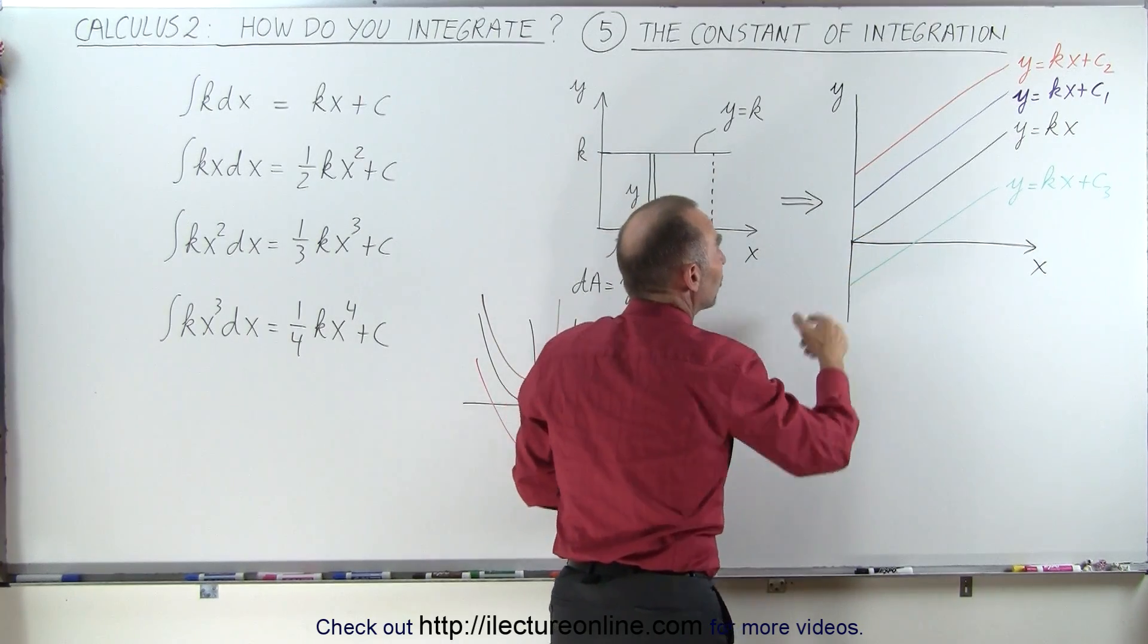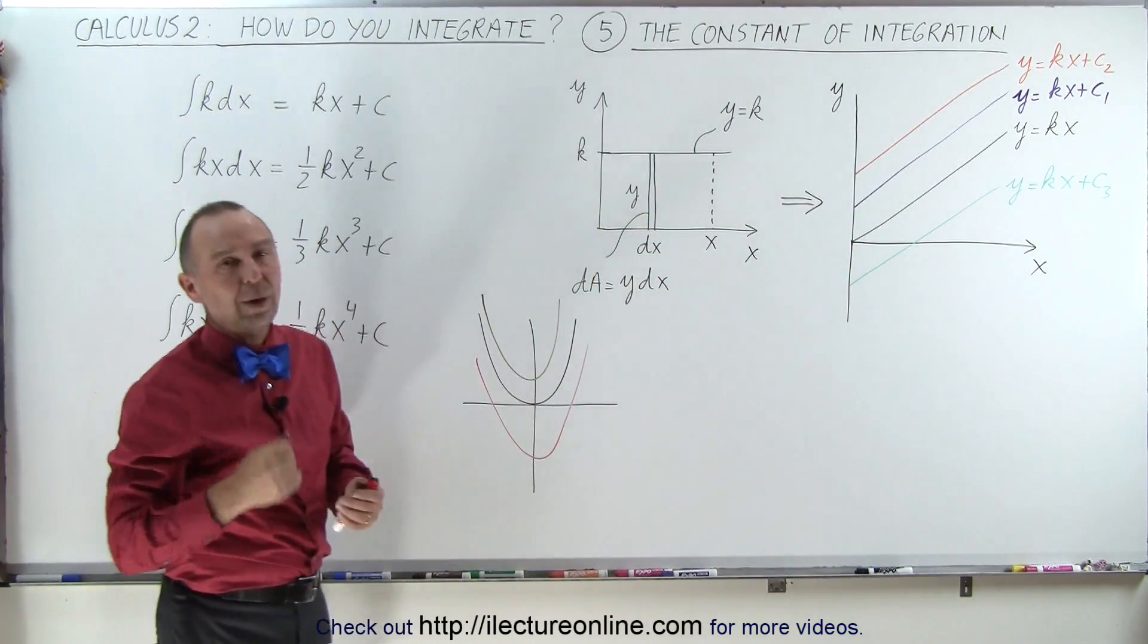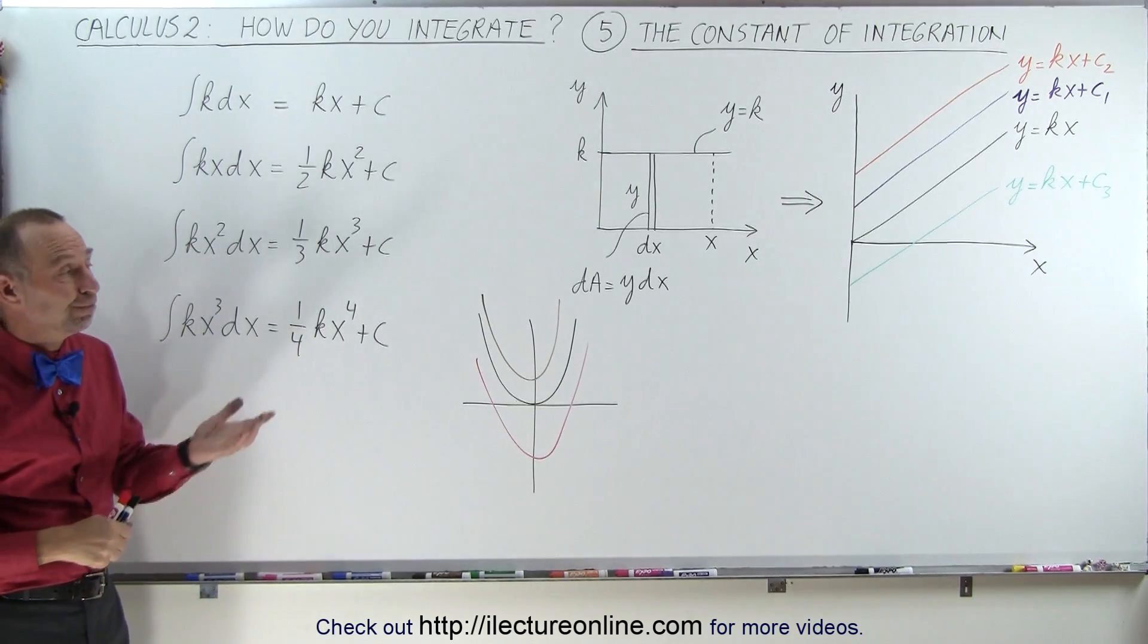It's simply necessary there to represent the possibility that our function doesn't go to the origin. It can be above the origin, below the origin. We just don't know. And that's why we add the constant of integration. And that's how it's done.